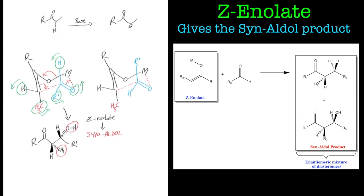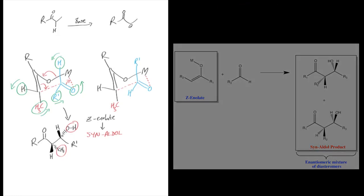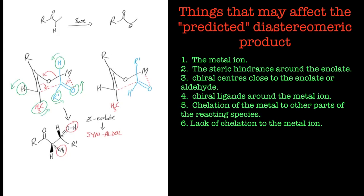And then if you start using chiral species or chiral ligands around your metal ion or your enolate, then rather than just getting a set of enantiomers as the products, which you will do because you'll get an enantiomeric mixture of this, this is a racemic mechanism if you will.